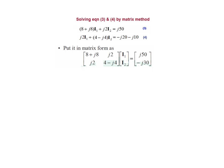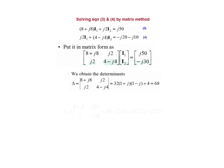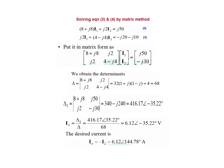These two equations in I1 and I2 are solved using matrix form. We find delta and delta2, since we only need to find I2, which is actually I0 in the opposite direction. So I2 = delta2 / delta = 6.12 angle minus 35.22 degrees. Since I0 is opposite to I2, we add a minus sign, which adds 180 degrees, giving I0 at 144 degrees.